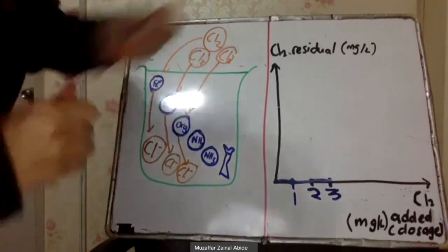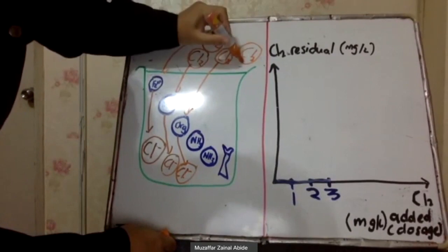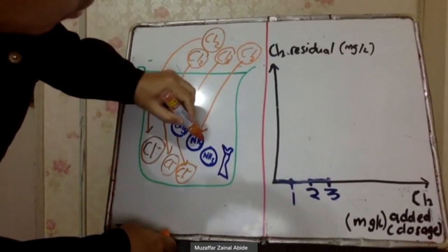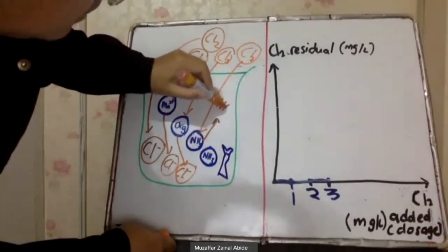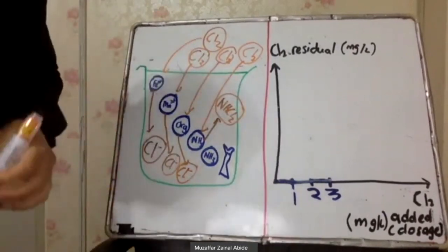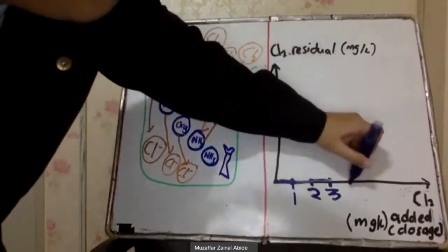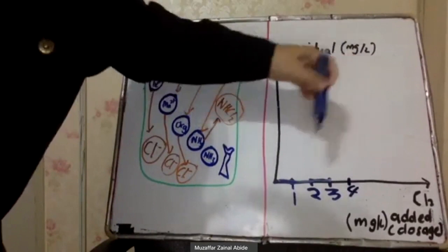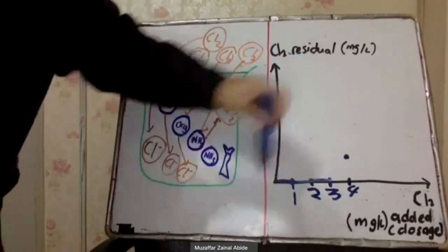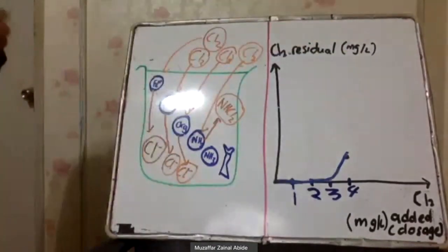After that, if we add another chlorine — the fourth dose — it will react with ammonia and produce combined chlorine, specifically NH₂Cl (monochloramine). Combined chlorine is a disinfectant, so after adding the fourth dose of chlorine, you start to see a chlorine residual with some value.